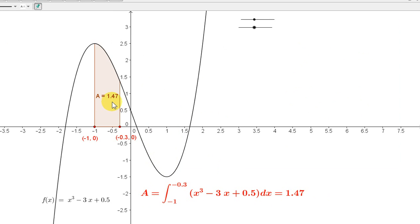Notice here that the area between the curve and the x-axis from minus 1 to minus 0.3 is plus 1.47. Now, let's increase the upper limit. Notice what's happening to the area. It's decreasing. A is decreasing.